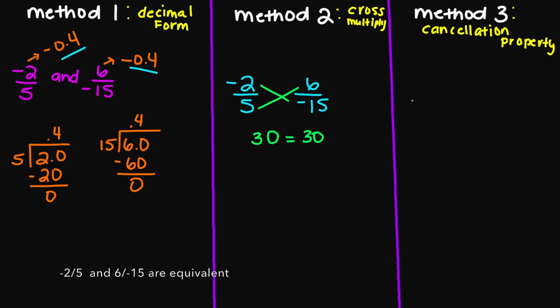Now let's look at the cancellation property, method number three. So if I have negative 2 over 5 here, and then here we have 6 over negative 15. Notice here that my negative 2 over 5 is already reduced to its lowest terms, so I cannot simplify that any further. I'm going to leave that one alone.